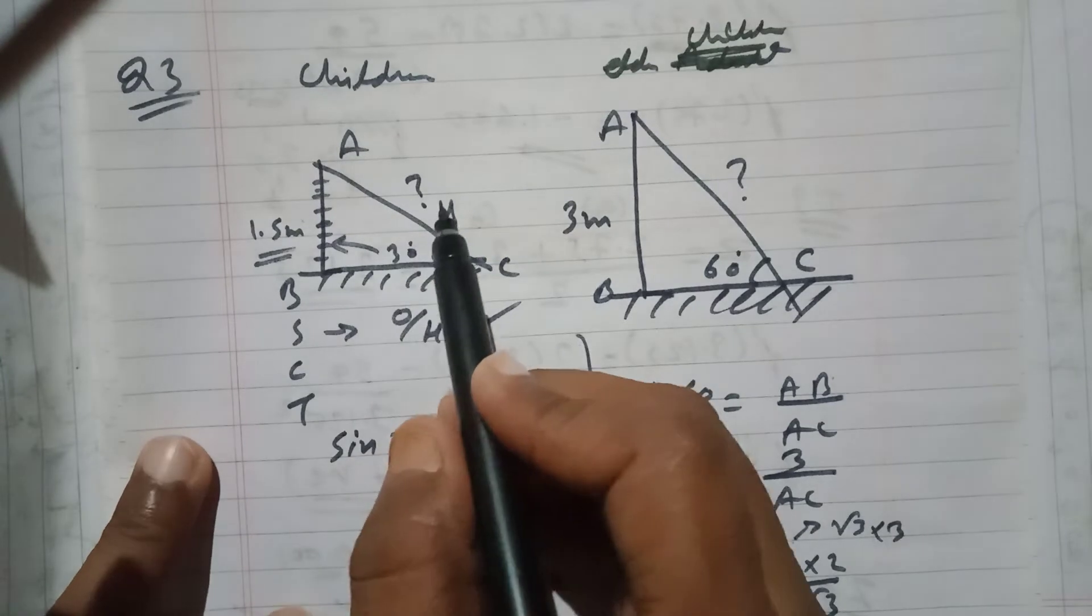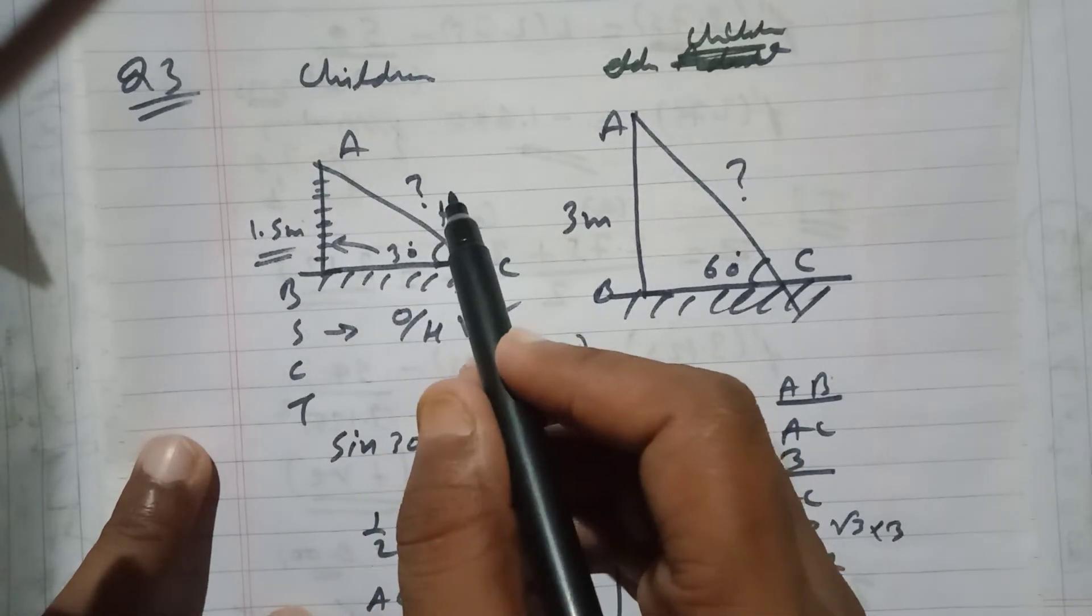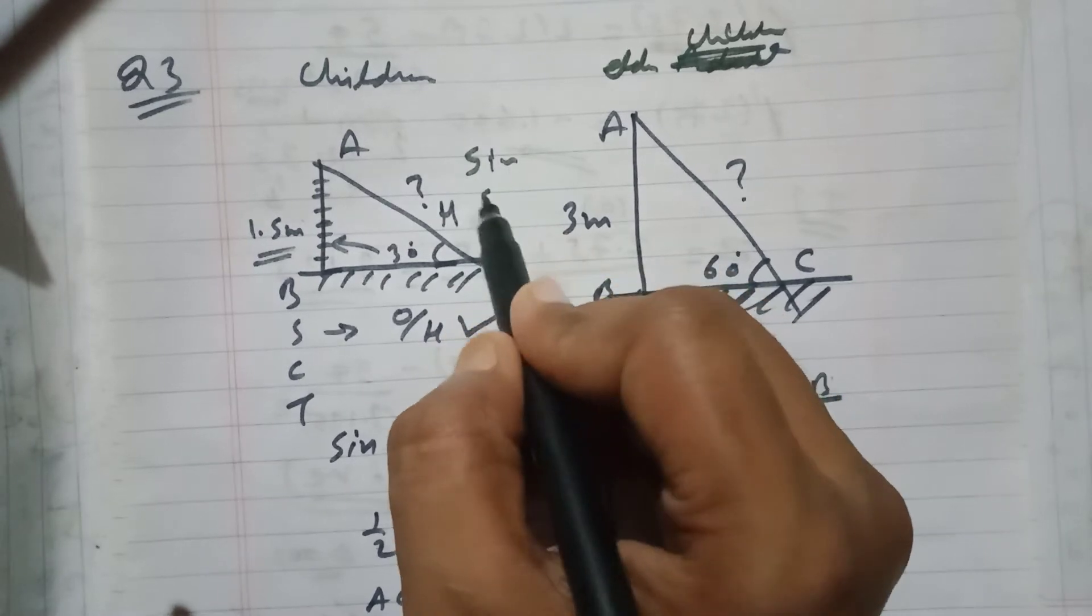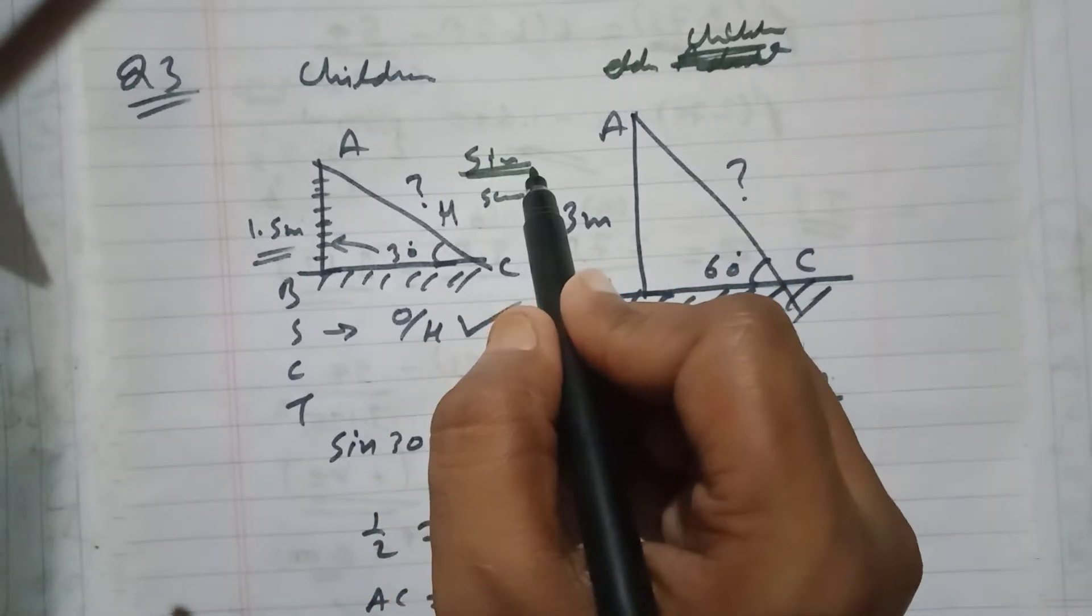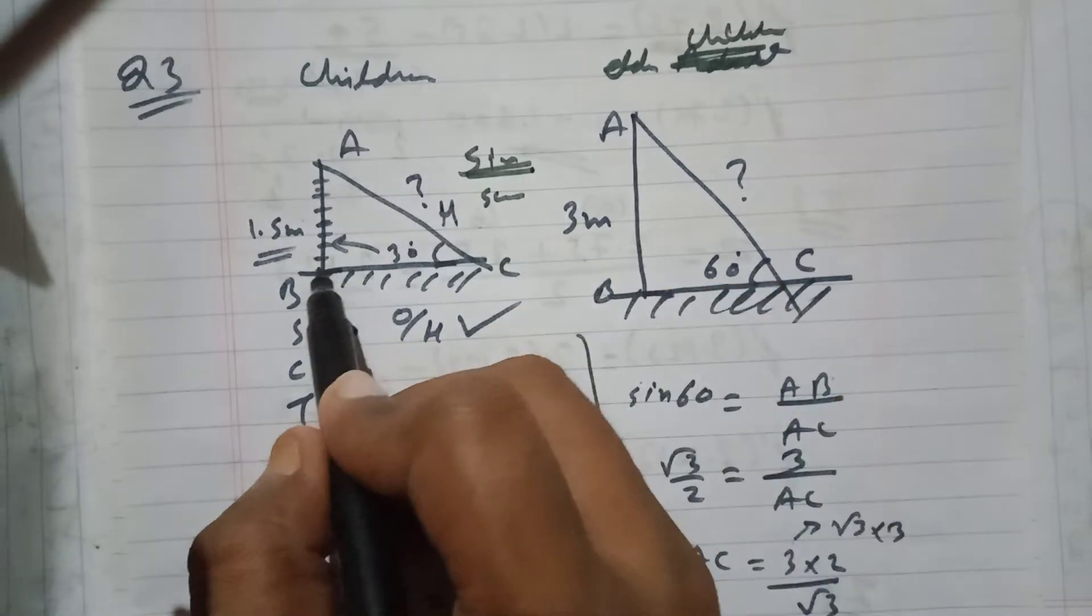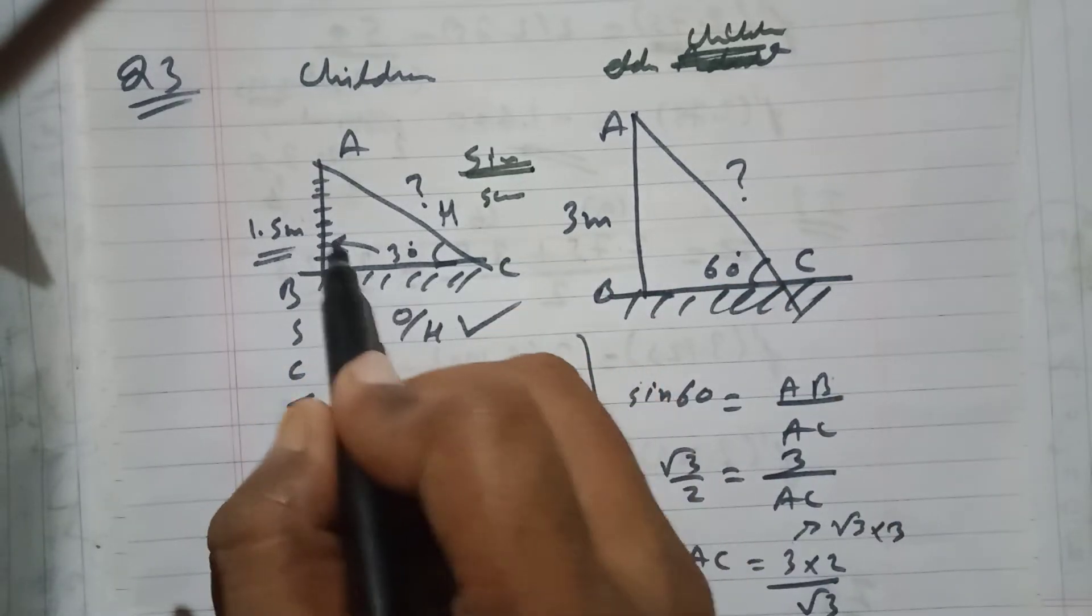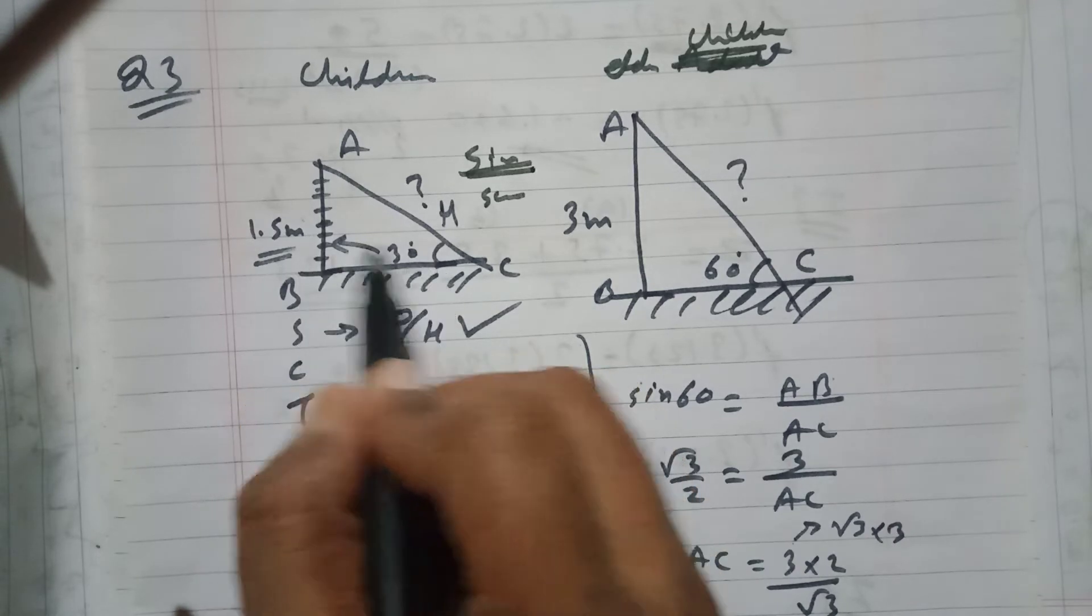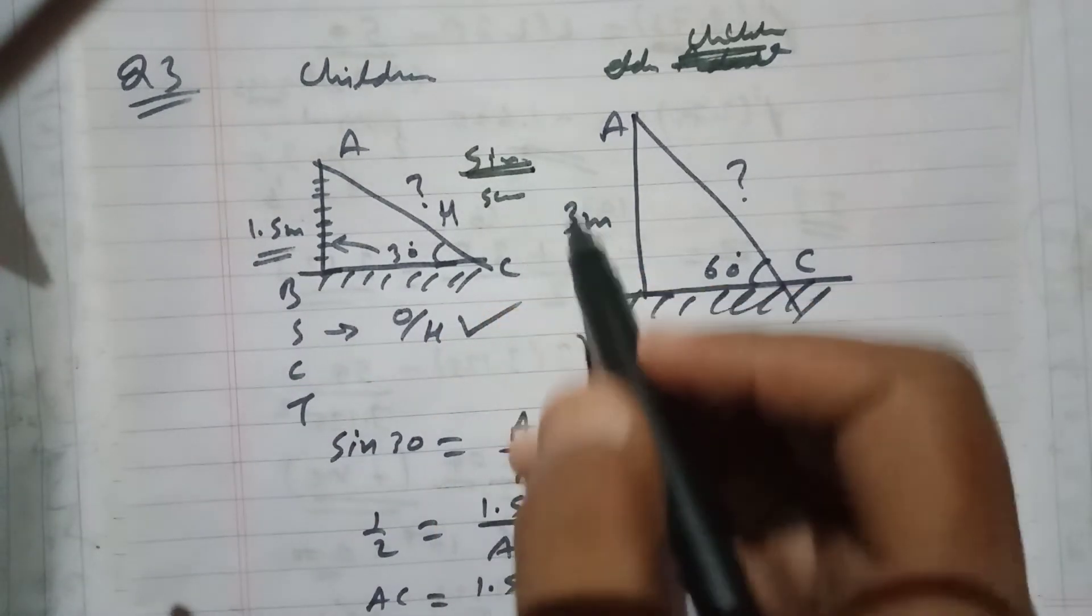Hypotenuse is in two formulas - the sine formula and the cosine formula. Here I will use the sine formula, why? Because the height is given, the side which is opposite to the angle is given.